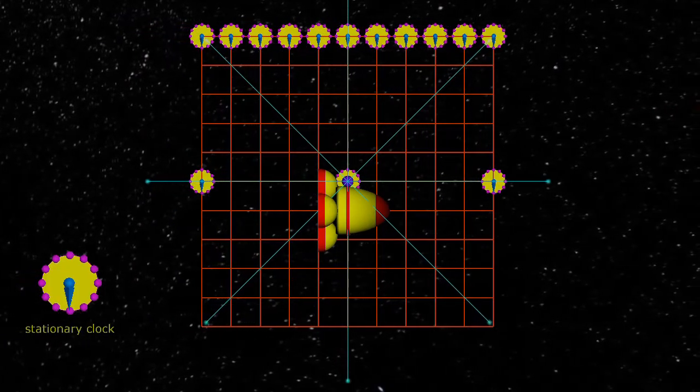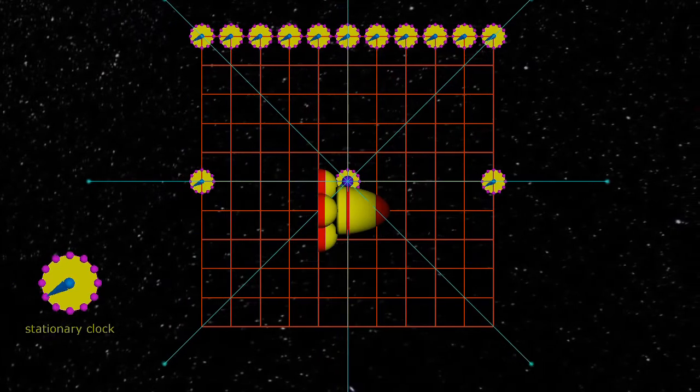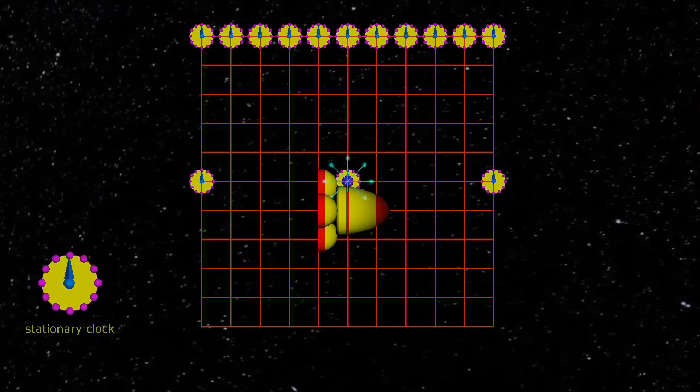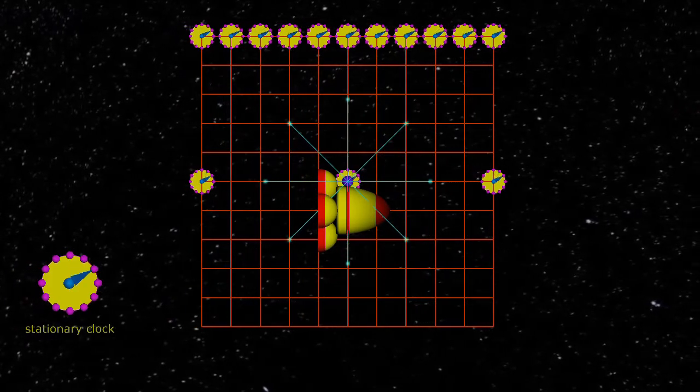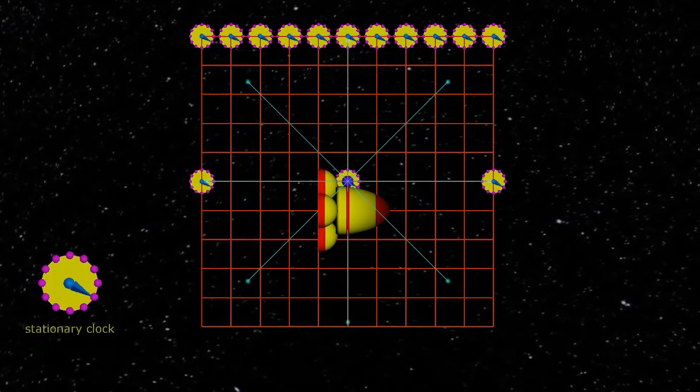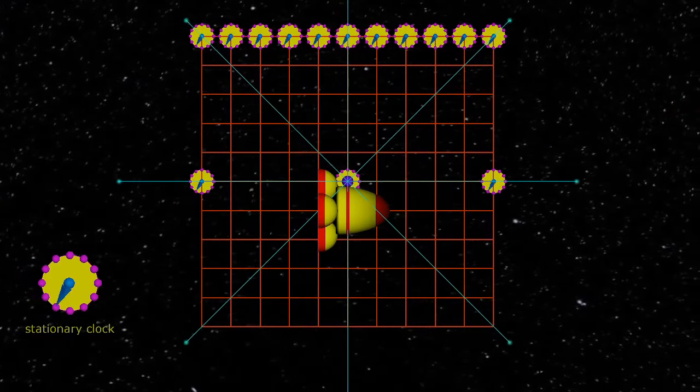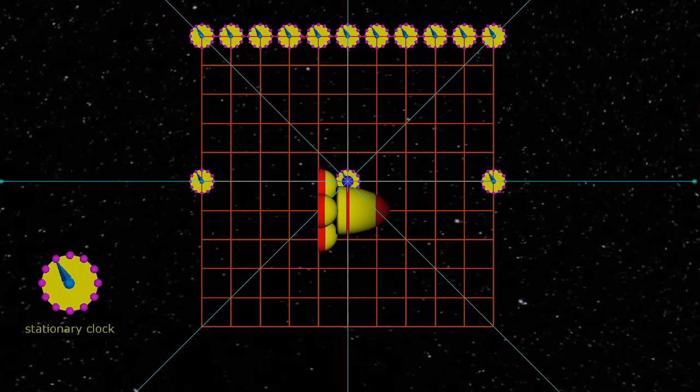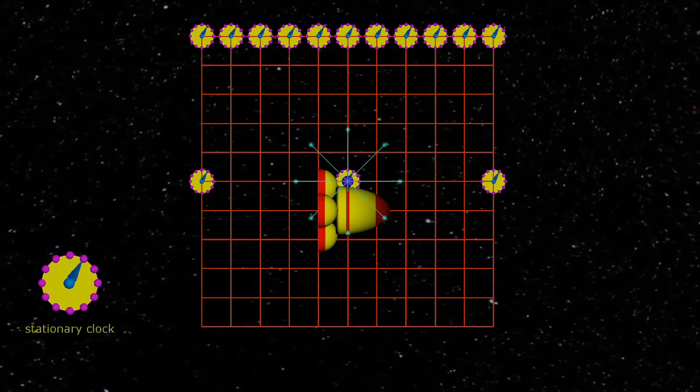I will also introduce some clocks to measure time. There should be a clock at every intersection in the grid, but for our purpose I only need a few clocks. All the clocks are synchronized. There is also a stationary clock in the lower left attached to our spacecraft.